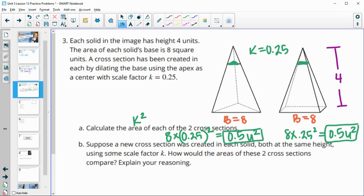This next one asks us, suppose a new cross section was created in each solid, both at the same height, using the same scale factor. How would the areas of the two cross sections compare? So they're going to be equal, because in both cases, you're going to take eight times whatever the scale factor is squared. So each of the new areas is going to be eight times k squared.